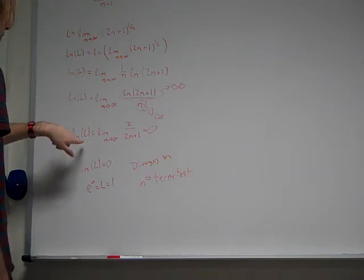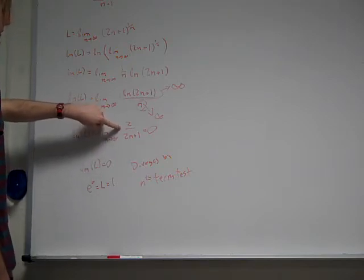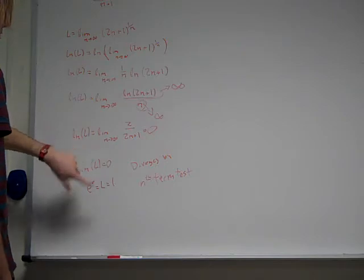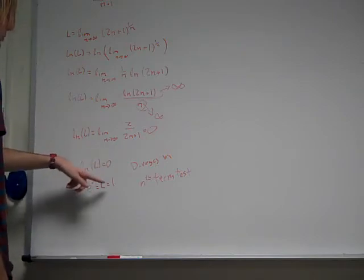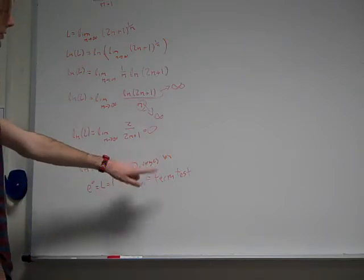And once you get to the ends, this is going to zero. So ln of L is going to zero. So you take E to the zero. So that would be one. So it diverges by the interim test.